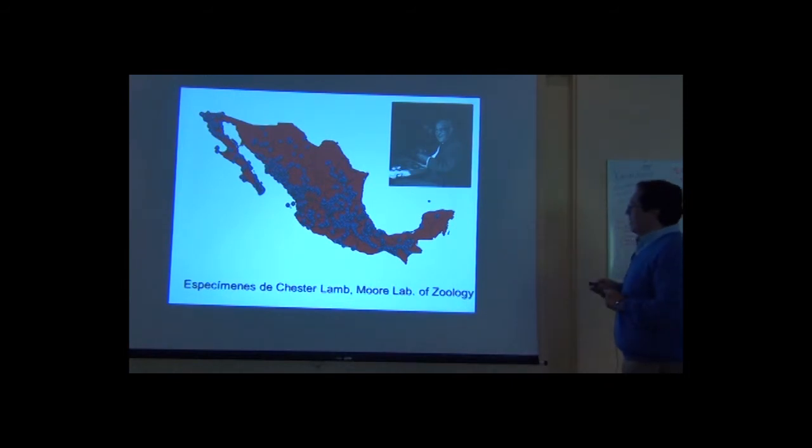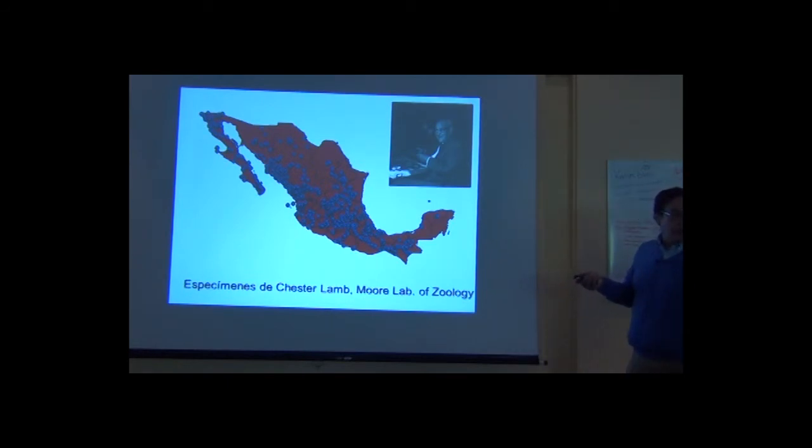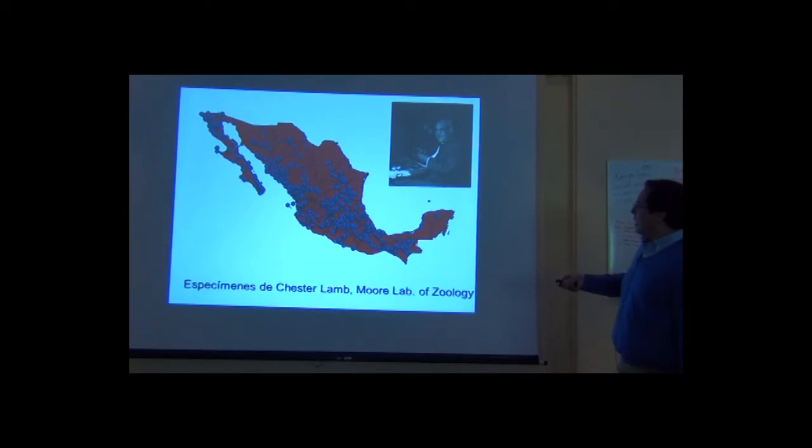This is the specimen localities for Chester Lamb. He was a very famous collector. This is the most intensive collector of Mexican birds in the history. He alone collected 40,000 Mexican bird specimens and 30,000 Mexican mammals. He was hired by a rich person in California that held his own collection. That was Robert T. Moore. Once Moore died, he donated the collection to a small college in California. But look, 30 years of work of Chester Lamb in Mexico, 70,000 specimens, and all these localities.